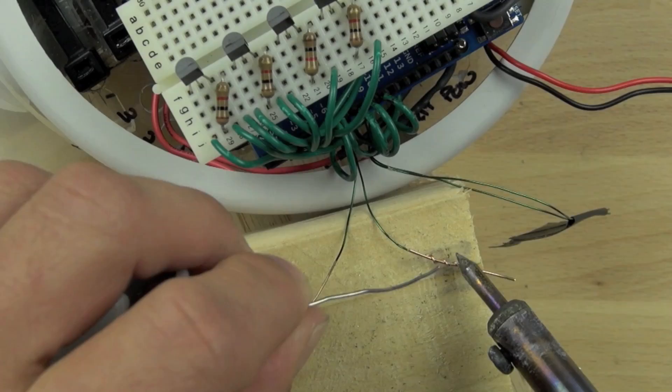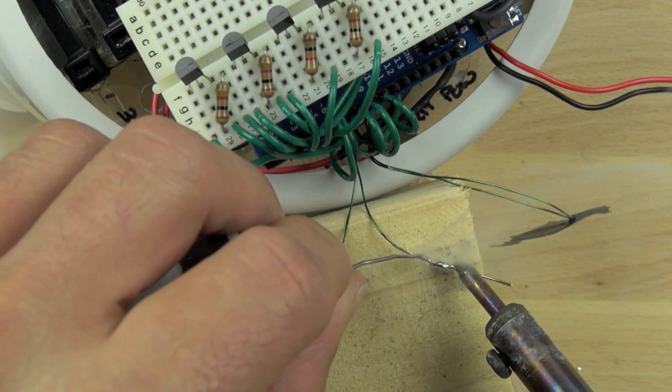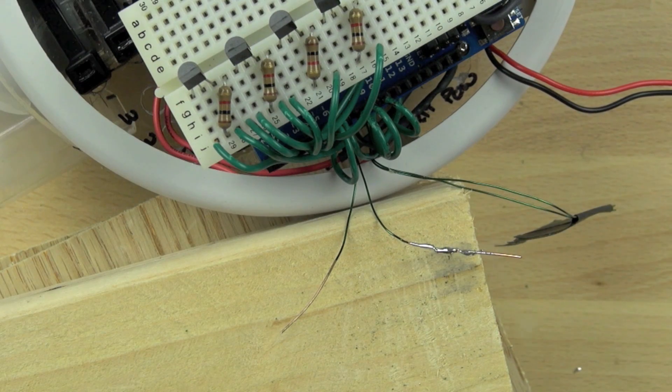We just twisted the magnet wire around the hookup wire and now we're soldering the two pieces together. You want to make sure that solder travels all up and down the joint to make sure it's a good solid connection.